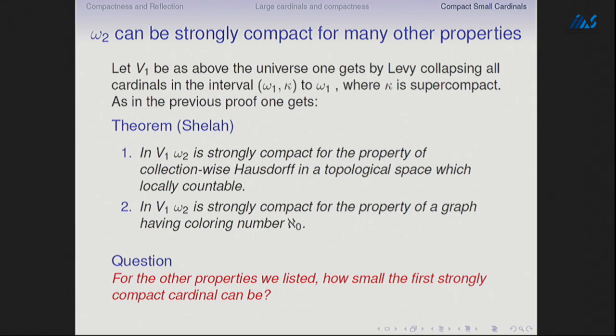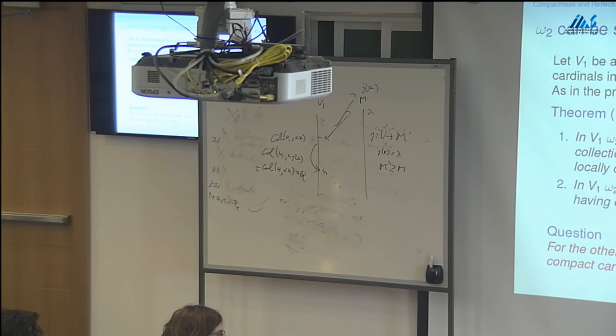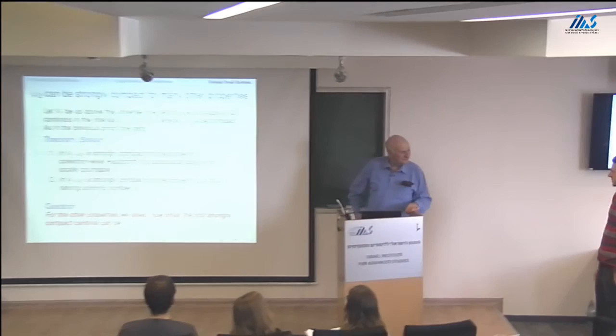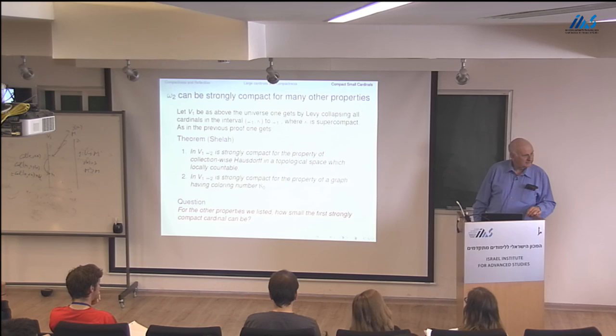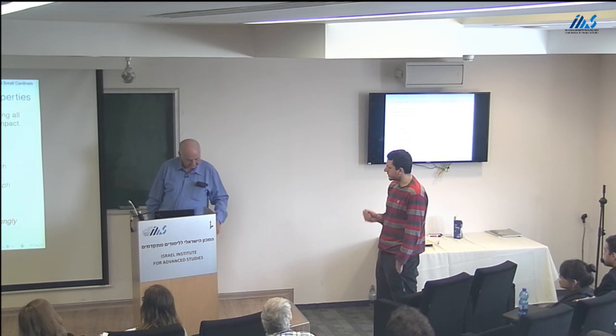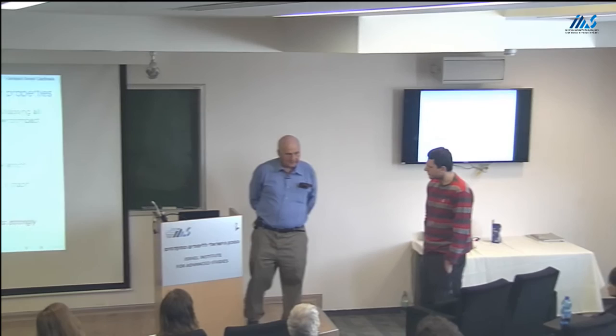I think this is as far as I wanted to go today. Thank you. Any questions or comments? Maybe I'll ask one question: is there something like a hierarchy of properties, perhaps depending on the complexity of the formulas expressing them, which would say that if κ is compact for this property then it's compact for that property?